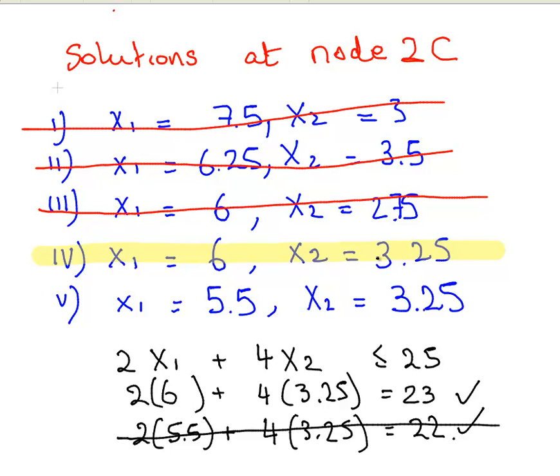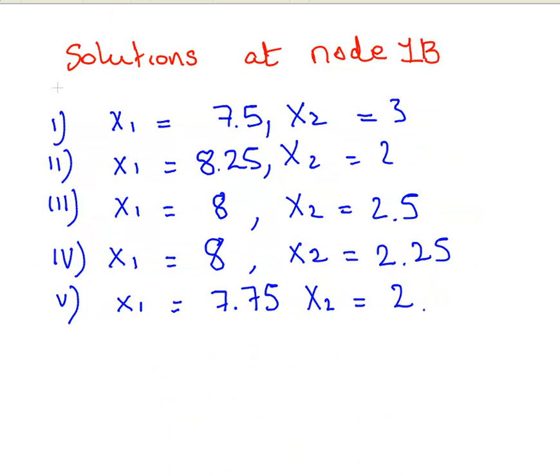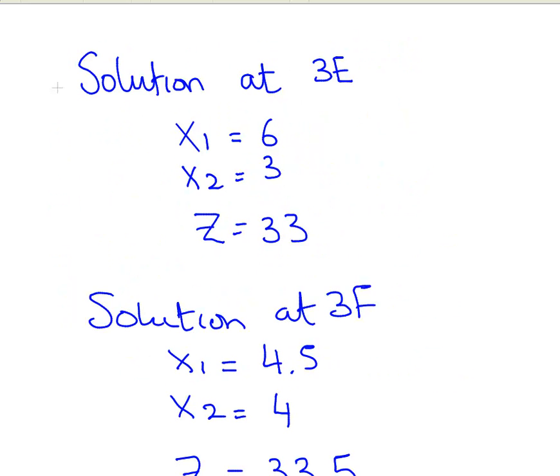So we would have branched out x2 less than or equal to 3 and x2 greater than or equal to 4. Now, what I am going to do is just confirm the answers, just to finish up.